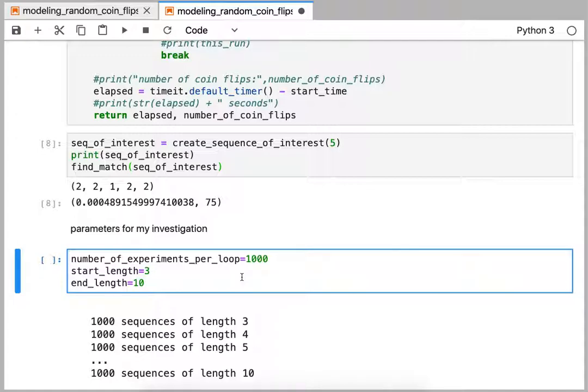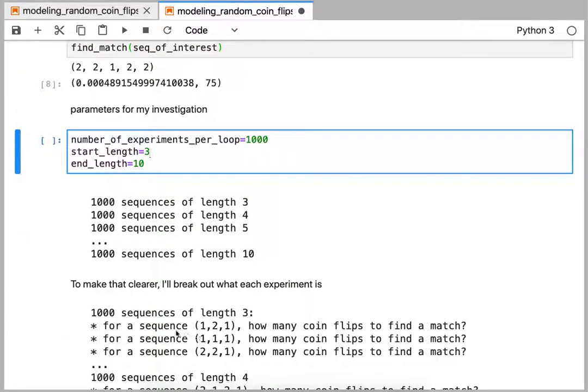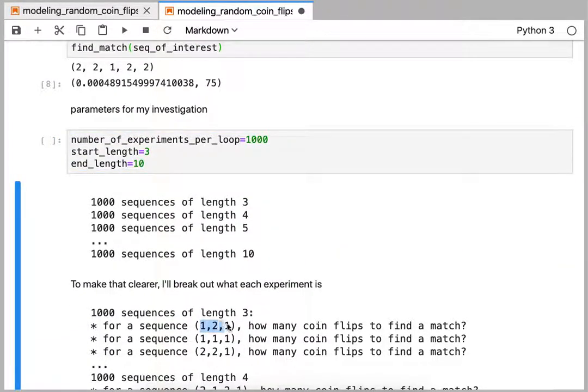I'm going to set up a thousand searches for each sequence length, so I'm going to have a thousand sequences of length three, a thousand sequences of length four, a thousand sequences of length five. Those are the things I'm trying to match, and for each of those sequences I'm going to see how long does it take to find a given sequence of length three.